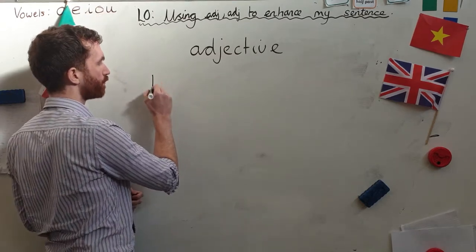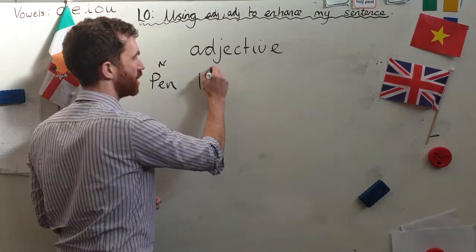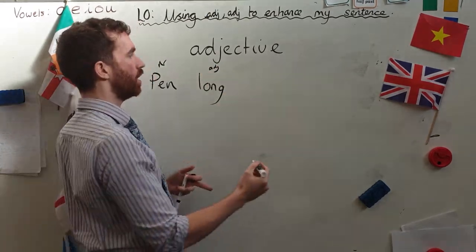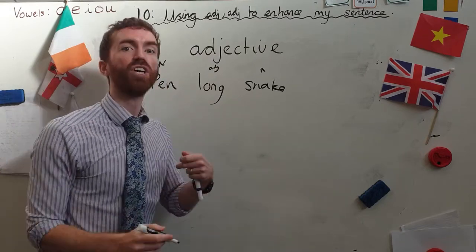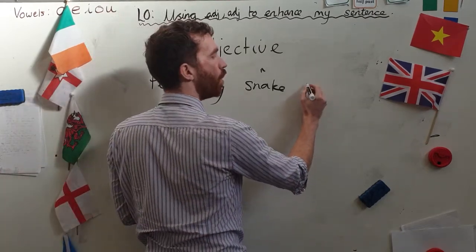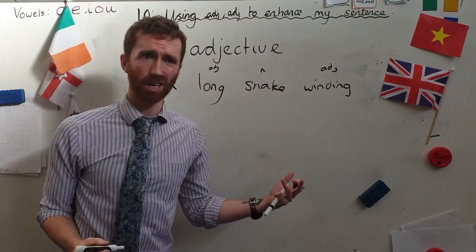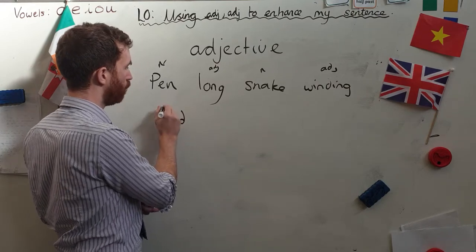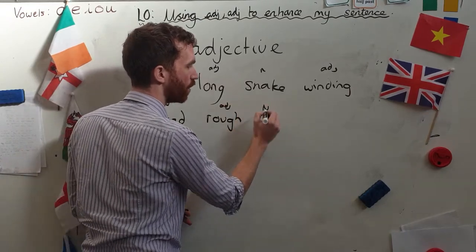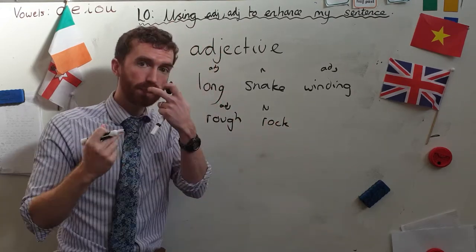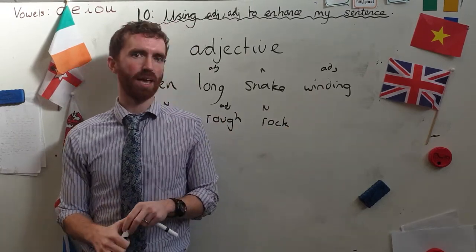For example, the first person might say 'pen' — we know that's a noun. The next person might say 'long' — it is an adjective, it does describe it. So the next person thinks of a noun that is long. I'm going to think of a snake. Noun, adjective, noun. Let's think of a word to describe a snake — winding. A winding snake. Then I've got to think of a noun that I could describe as winding — it could be a road. Now I've got to think of an adjective to describe a road — it could be rough. A noun that is rough — it could be a rock. And you keep going. Noun, adjective, noun, adjective, but they have to link. That's your first little game — go!